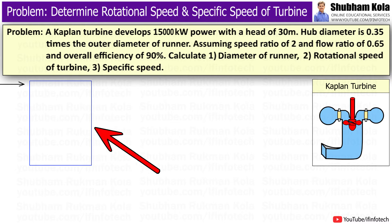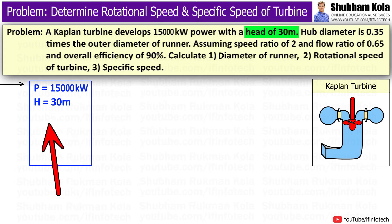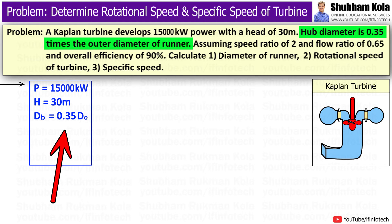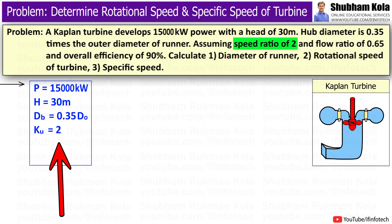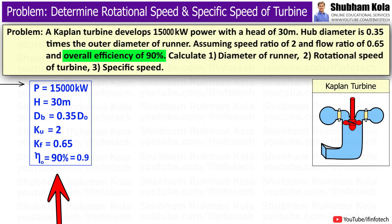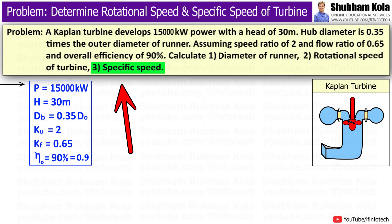Now to solve this problem, let's write down the given data: shaft power is 15,000 kW, net head H is 30 meters, hub diameter db equals 0.35 times outer diameter Do, speed ratio Ku equals 2, flow ratio Kf equals 0.65, and overall efficiency is 90%. We need to calculate the diameter of the runner, rotational speed of the turbine, and specific speed.